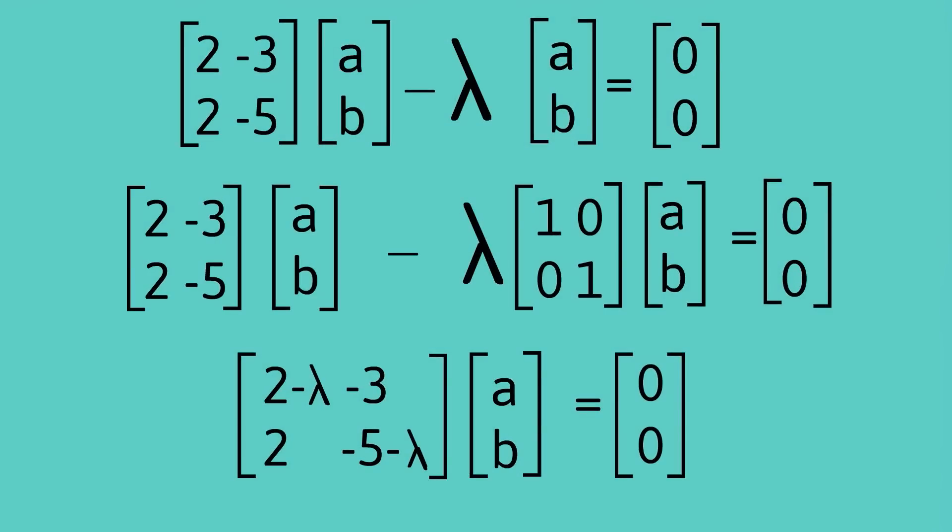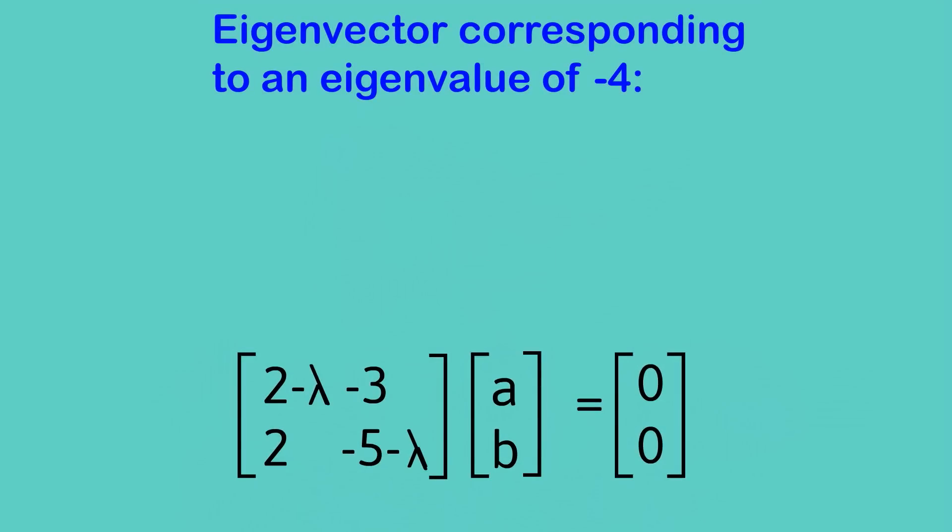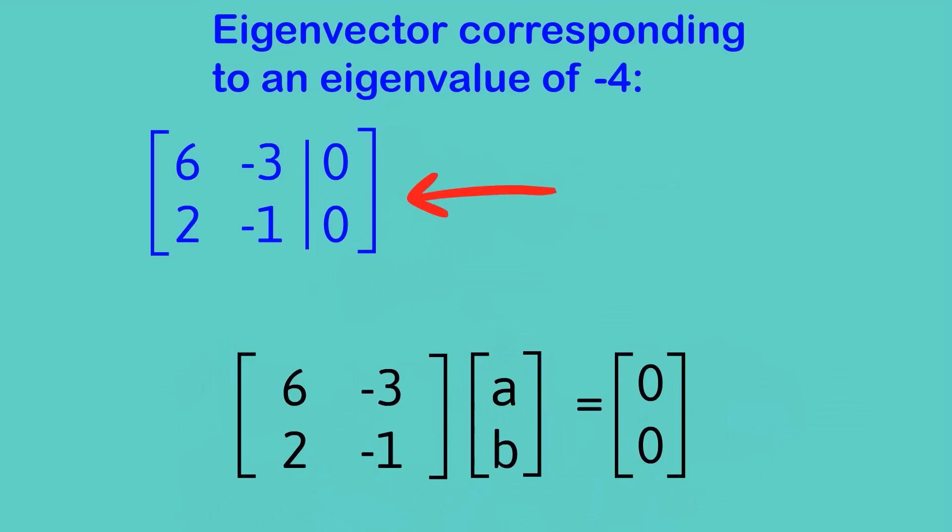Okay, we've worked out the eigenvalues, now let's work out the eigenvectors. To do that let's go back to some calculations I had up before. I'm only going to need the last line and let's find the eigenvector corresponding to an eigenvalue of negative 4. So we know that lambda equals negative 4 so we can just put it in to the matrix and that gives us what we can see at the start of this line here, this matrix [6,-3; 2,-1].